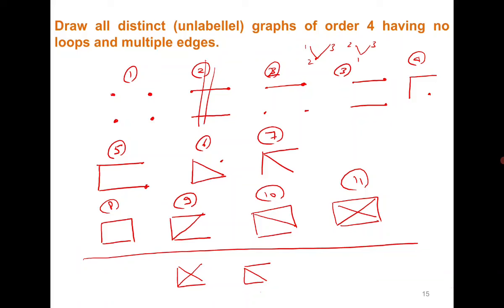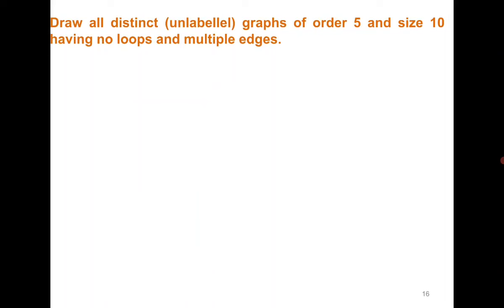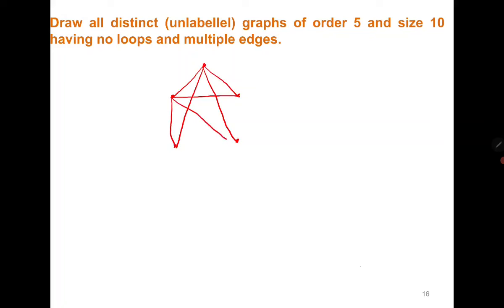Next question: draw all distinct unlabeled graphs of order 5 and size 10 having no loops and multiple edges. Making each vertex adjacent to all others, one by one, we get a unique graph. This graph is a complete graph — where each vertex is adjacent to all other vertices with no loops or multiple edges.